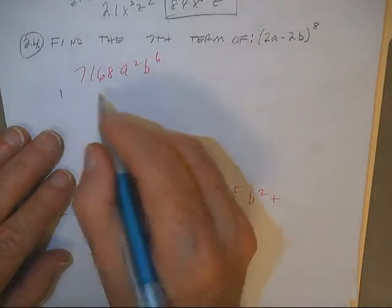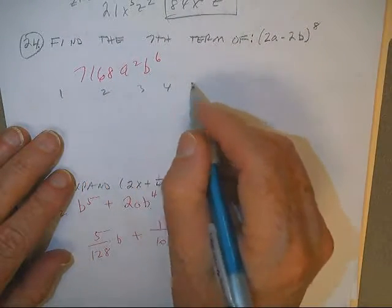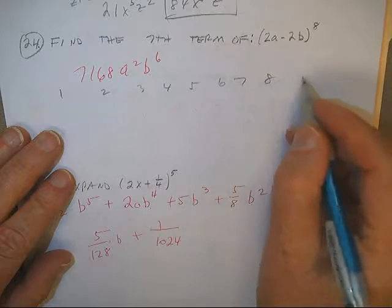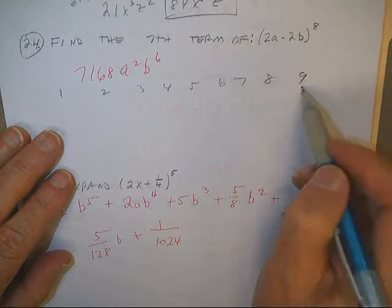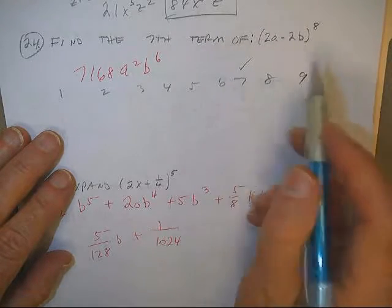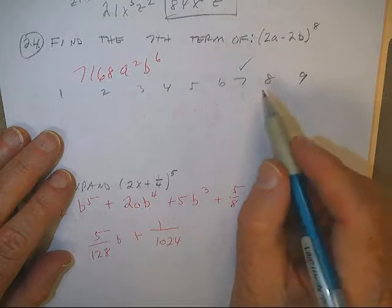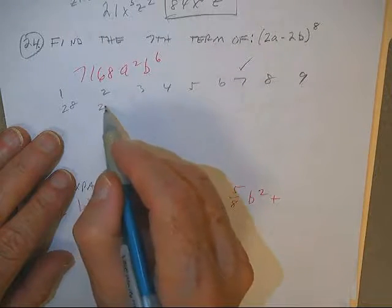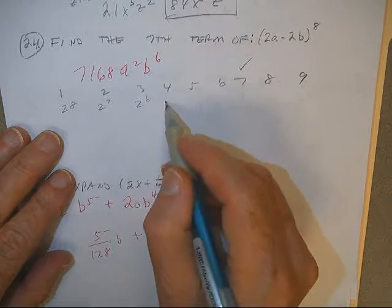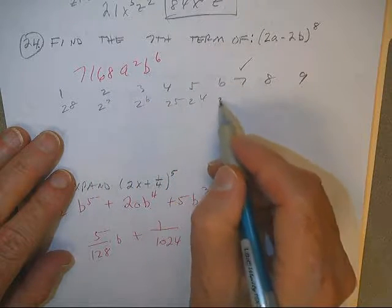Okay, very good. Seven terms: one, two, three, four, five, six, seven, eight, nine. Eight, one more would be that. They want this one right here. Okay, let's see: 2^8, 2^7, 2^6, 2^5, 2^4, 2^3.